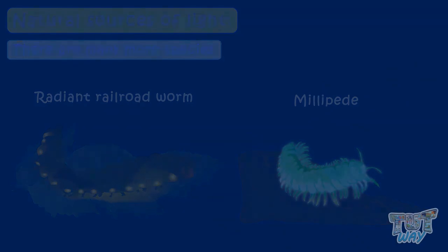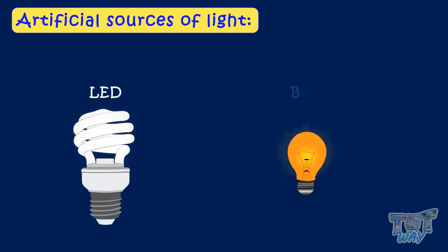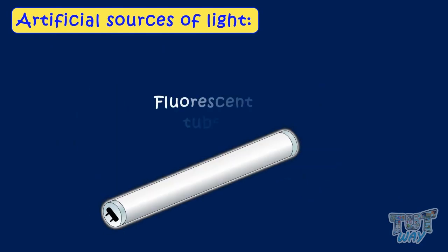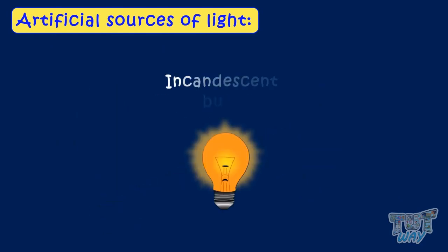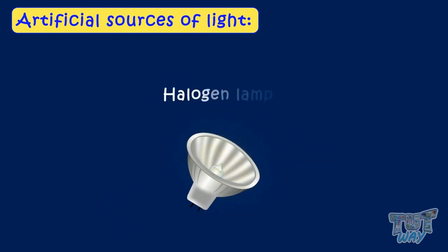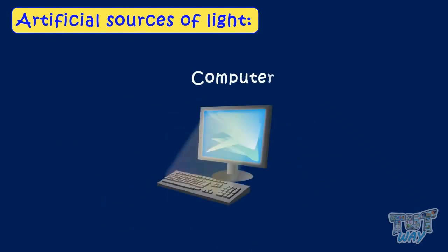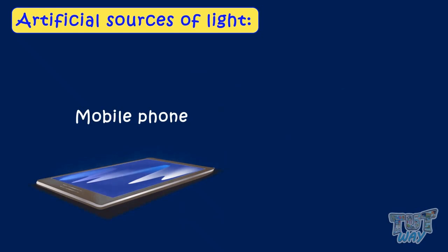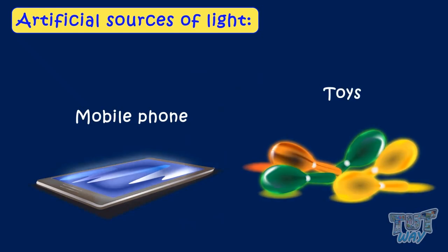Now let's see some artificial sources of light. Light from sources like LED, bulbs, fluorescent tubes, incandescent bulbs, halogen lamps, LED lights, computers, phones, and toys — all are artificial sources of light.